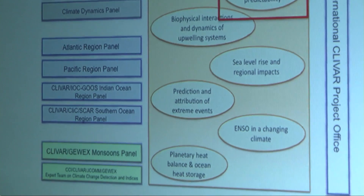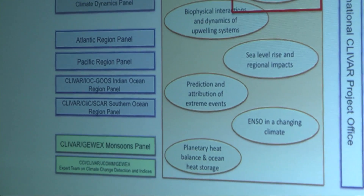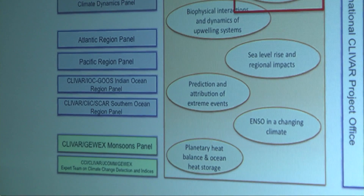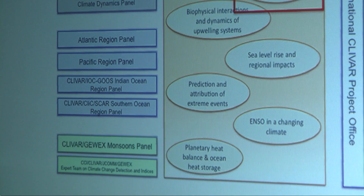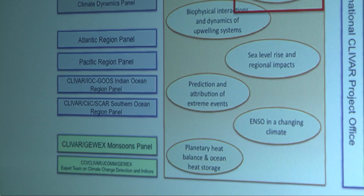In the past, we had three panels for monsoon: Asian monsoon, Australian monsoon, and American monsoon. Now we're into G-Rex — a joint monsoon panel. G-Rex deals with the hydrological cycle and energy cycle of the land, so CLIVAR is doing ocean and G-Rex is doing land, as if you can really separate these things.